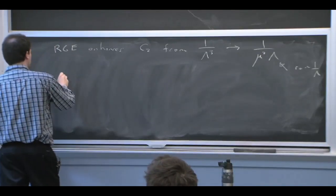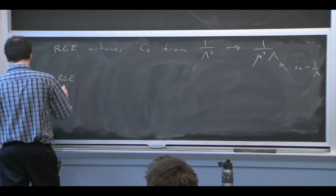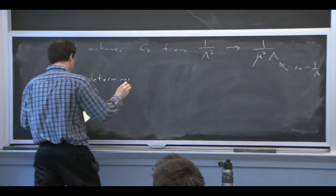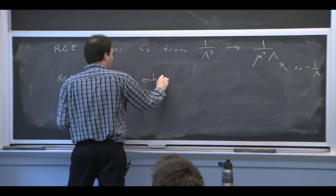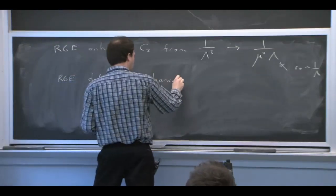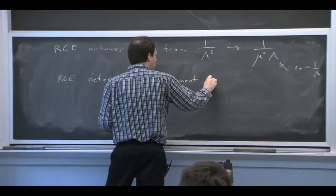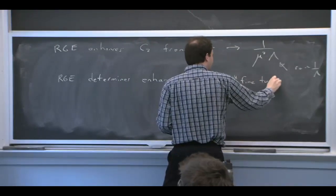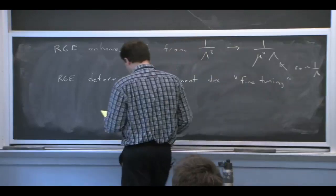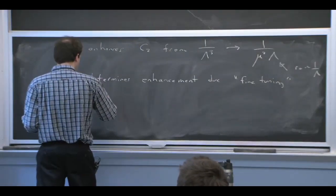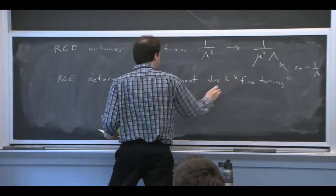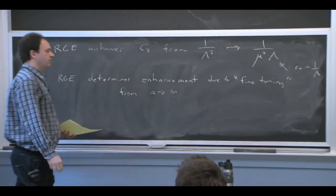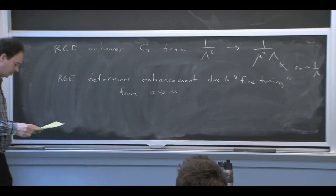So what the RG actually does is it tells us, one way of thinking about it is that it tells us the enhancement due to fine tuning of all operators in the theory. And that's really because the fine tuning was just a change of our power counting. And we have to propagate that change everywhere. And we can do that. And it's the beta functions that tell us how to propagate the fine tuning.